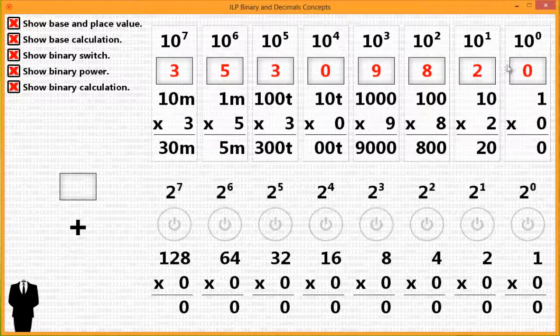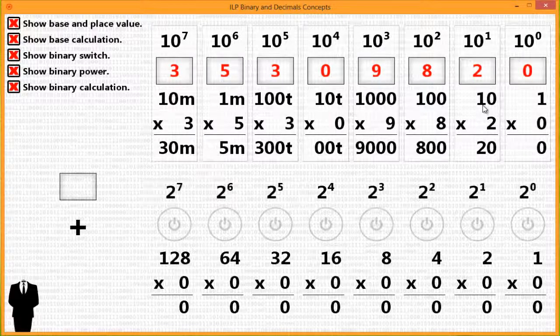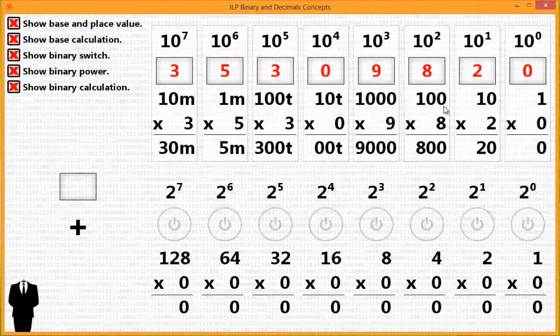Like the decimal system, when you start at 10 to the 0, it's 1. Each time you move, you increase by 10 fold. This place value of 10, when you increase to the next one, it's 10 times 10 or 100.